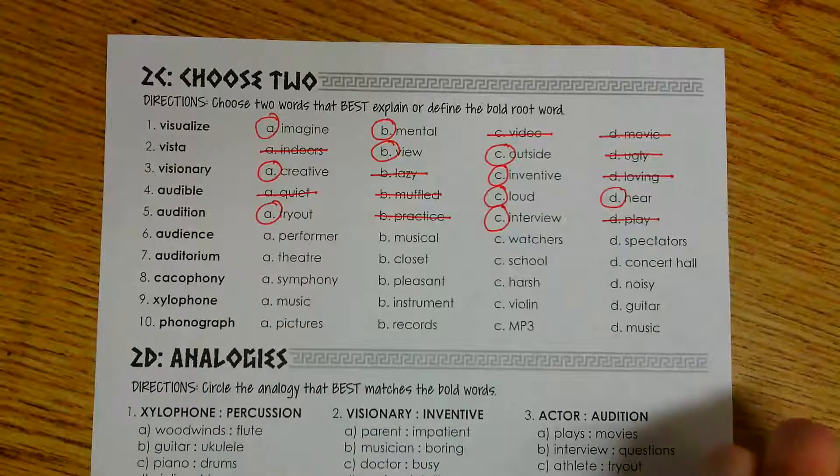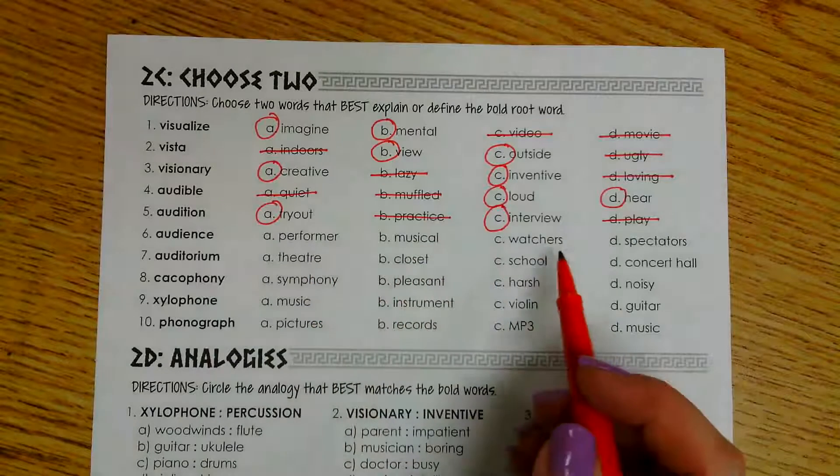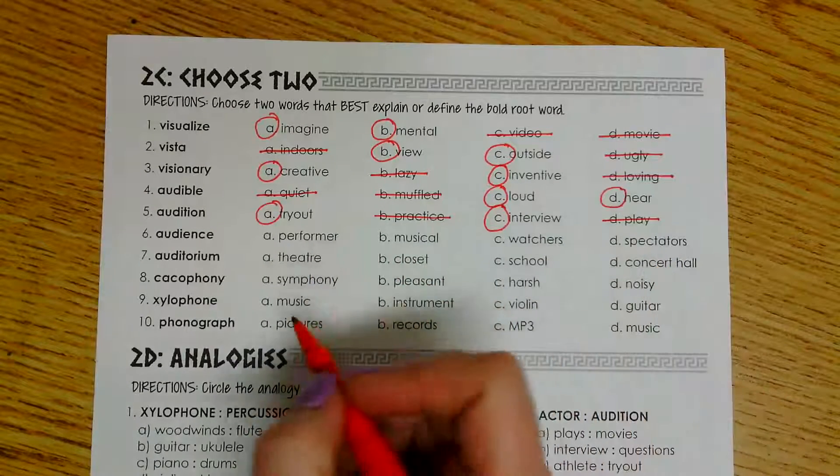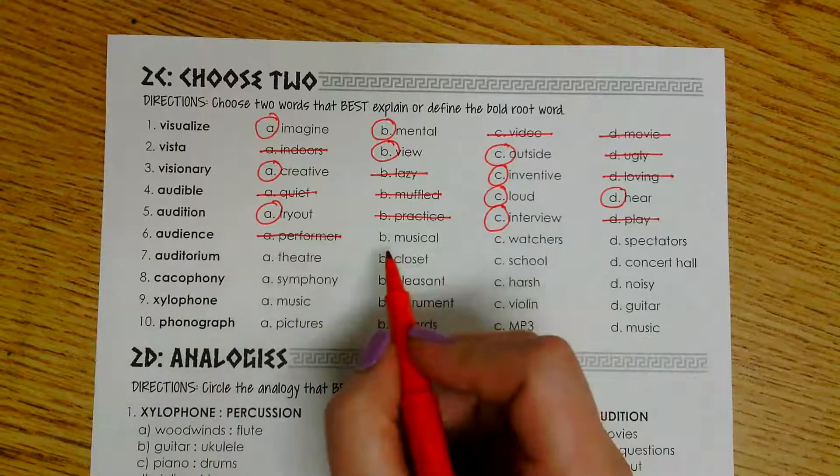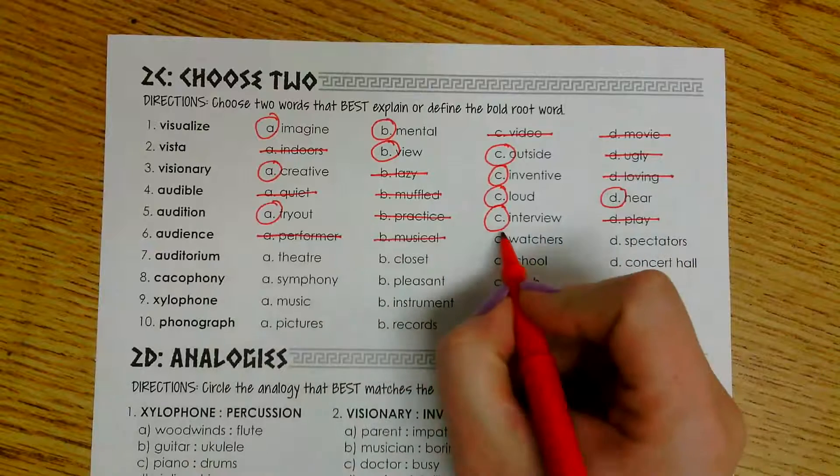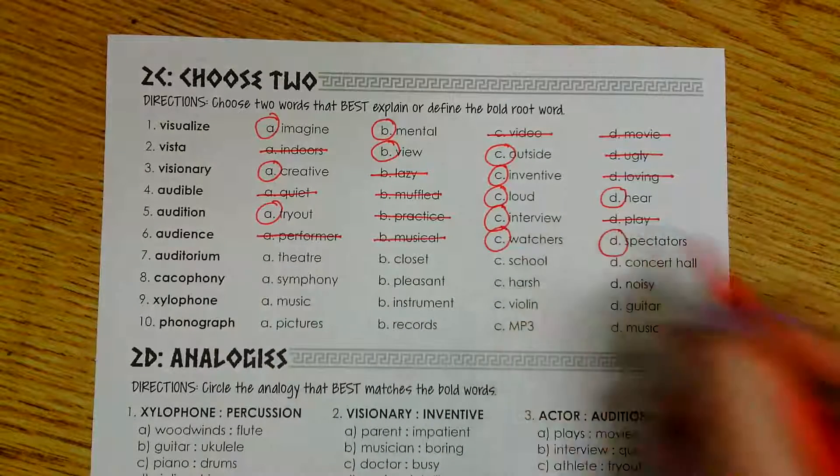Next is the word audience. We have performer, musical, watchers, and spectators. I know that an audience is not the person doing the performance. And an audience is not going to be a musical. So that leaves me with the audience would be the people who are watching, which could also be called spectators.